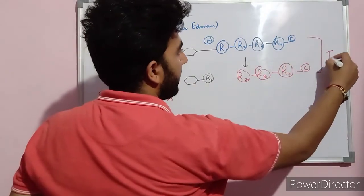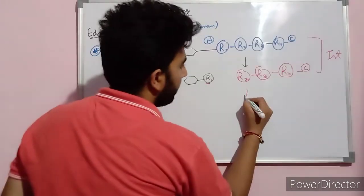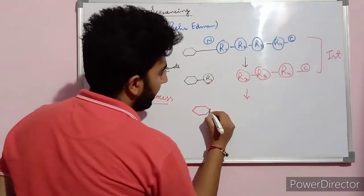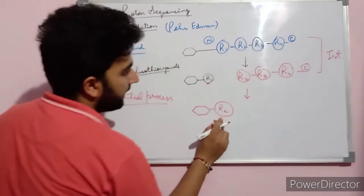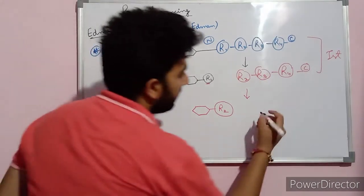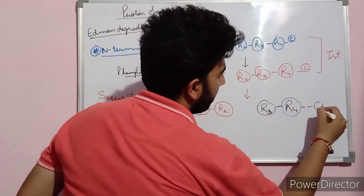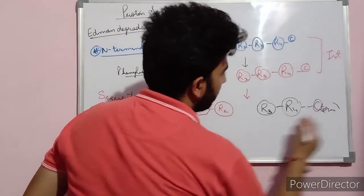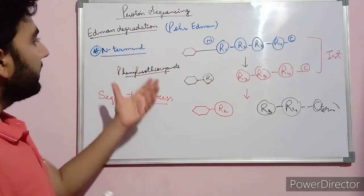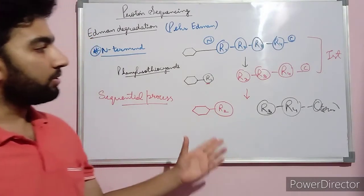This is the first round of reaction. In this case, we will determine the first amino acid. Then again, phenyl isothiocyanate combines with the second amino acid and cuts it from the rest of the chain, and the chain remains R3, R4, and so on to the C-terminal. This is the sequential process. In this way, the Edman degradation process helps in determining the N-terminal amino acid in a sequential process, one by one.